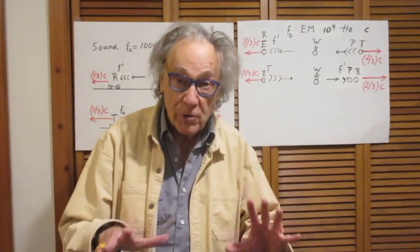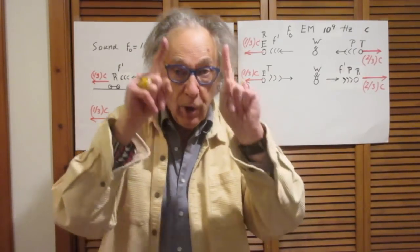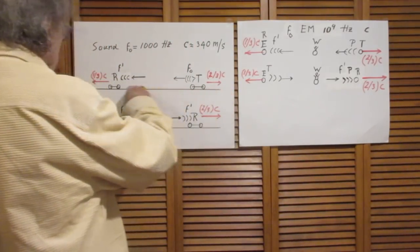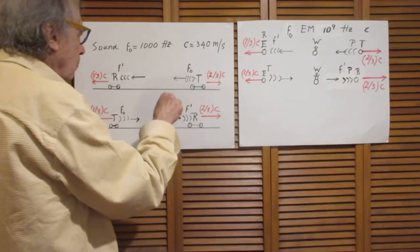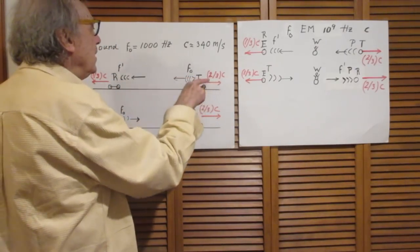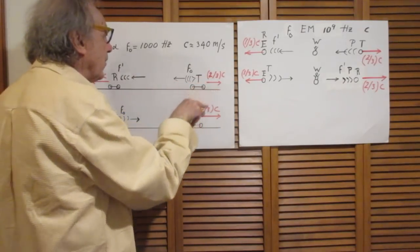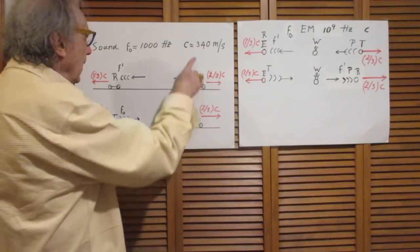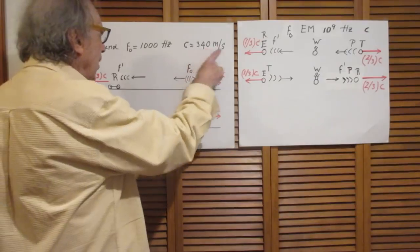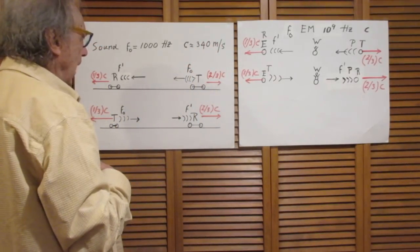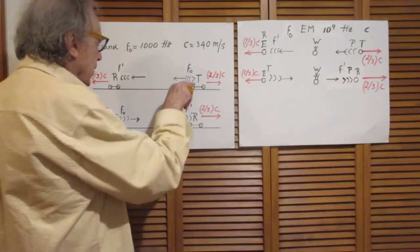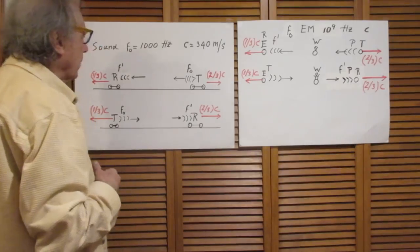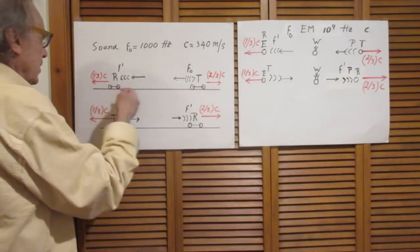You ready? There we go. This is a horizontal surface. Here is a car and the car is moving with two-thirds the speed of sound in this direction. See, here is the speed of sound, has nothing to do with the speed of light. At room temperature the speed of sound is about 340 meters per second, so two-thirds of the speed of sound is a little more than 800 kilometers per hour.